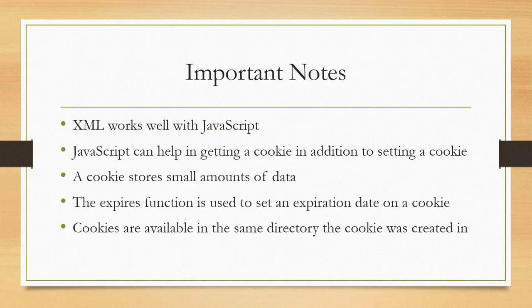Some interesting — if not important — notes: XML works well with JavaScript. As you saw last week, JavaScript can help in getting a cookie as well as setting a cookie. Cookies store small amounts of data, and the expires function helps us set an expiration date on a cookie. Cookies are available in the same directory the cookie was created in, unless we change our path.